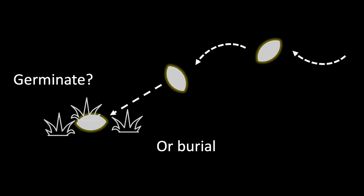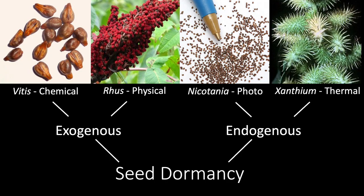Once a seed gets to wherever it's going, if conditions are right it may germinate. If not, the seed will sit on the soil surface, and if it doesn't get carried away and eaten, in time it may get buried in the soil. Many plants have evolved seed dormancy as a strategy for taking advantage of the soil seed bank until conditions become favorable. These can be broken into two major categories: endogenous dormancy, caused by something inside the embryo itself, and exogenous dormancy, caused by something outside the embryo. Vitis — the genus that grape is in — has chemical seed dormancy, where growth regulators in the seed coverings get leached away or deactivated, and the plant eventually germinates.